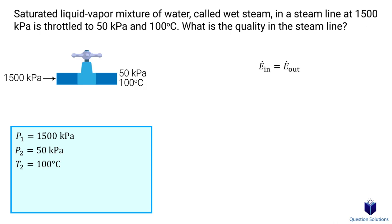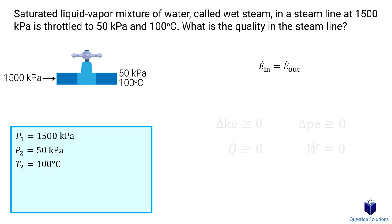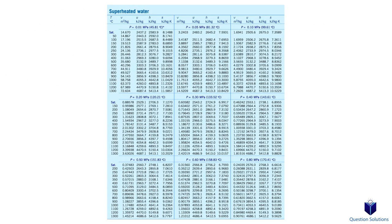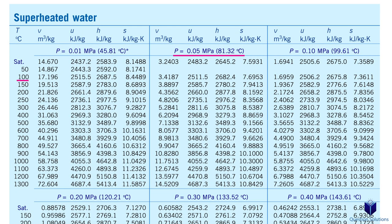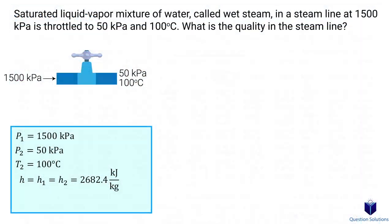Let's write our energy balance equation: energy in equals energy out. Since this is a throttling problem, kinetic energy, potential energy, heat transfer, and work are all negligible. So our energy balance equation simplifies to: initial enthalpy equals final enthalpy. We can find the final enthalpy value using a table since we have both the pressure and the temperature for the exit side — 50 kilopascals and 100 degrees Celsius. Remember, this enthalpy value is the same at the inlet side of our throttling valve.